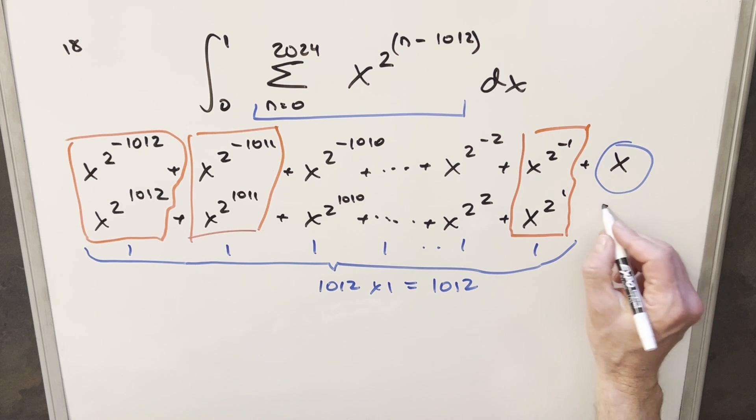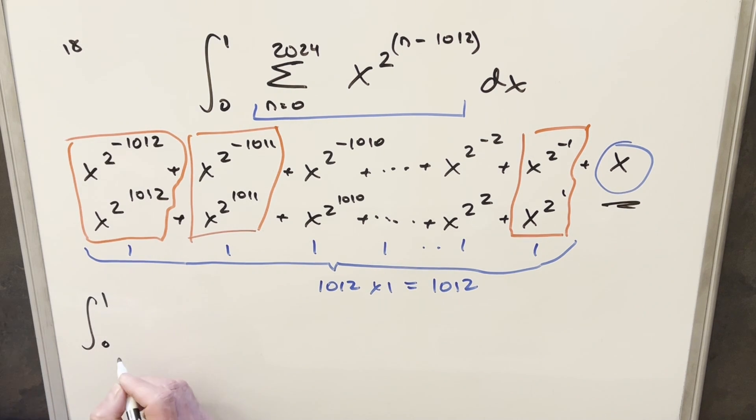So in order to finish this off, I just need to integrate x. But this is again just power rule. So we integrate x and we get x squared over 2. We need to evaluate that from 0 to 1. But that's just going to be 1 half.